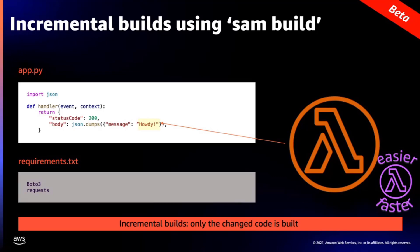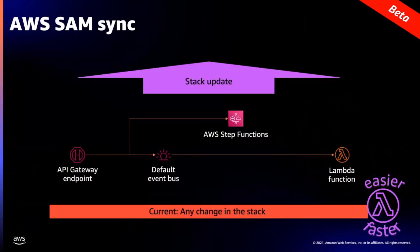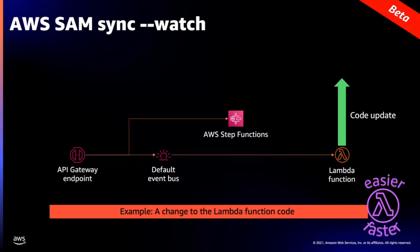If you change something in your Lambda function code and run SAM build, it only updates that code — it separates the cache and keeps dependencies separate from the code. Previously, when you wanted to test in the cloud, it would do a full stack update with CloudFormation, taking several minutes. Now, when you make a code-only change, it doesn't deploy the full stack — it only updates what you changed. This makes serverless development much faster because the whole stack doesn't redeploy.